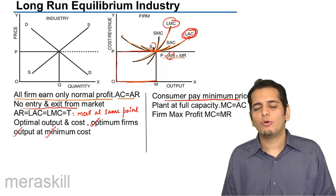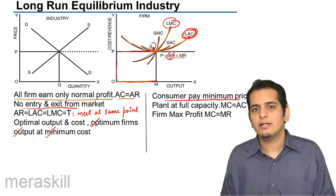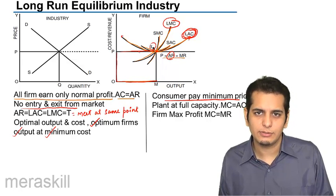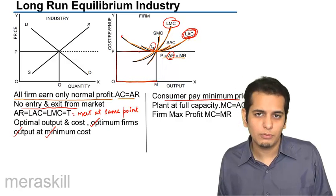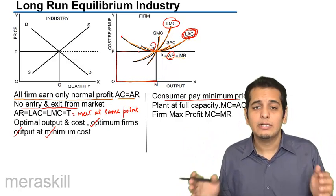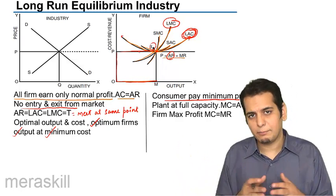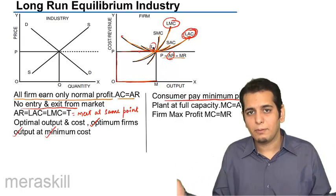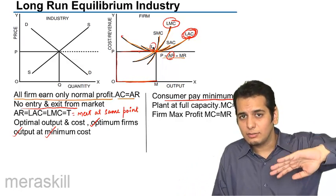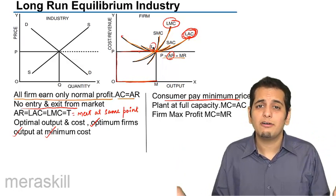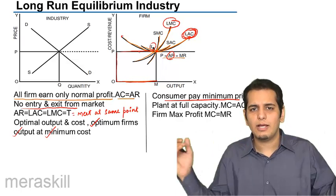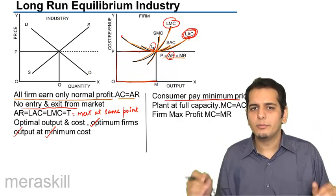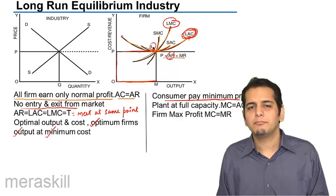Ideally no consumer would want to pay a higher price, but if they are paying a higher price, this will give a situation of super normal profits for the sellers. Since the sellers are earning super normal profits, other firms will get attracted and enter the market, leading to higher supply. As supply increases, the price will come down to its original equilibrium position. So whatever you do, you will return to equilibrium in the long run, and this would be the minimum price that consumers pay.